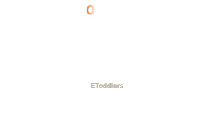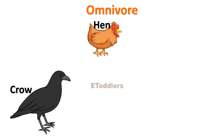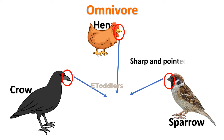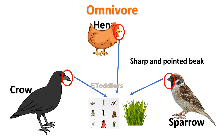Omnivore birds have sharp and pointed beaks for eating both plants as well as small insects.